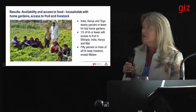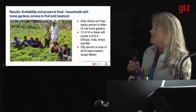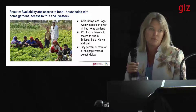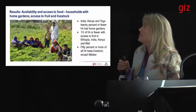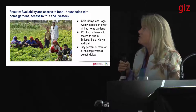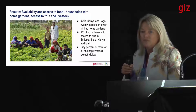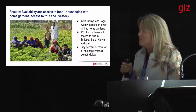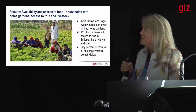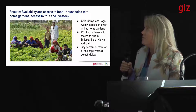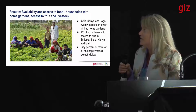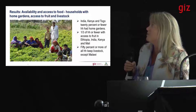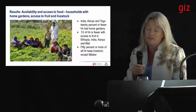There are also a large series of questions on home gardening, access to fruit, and livestock. In India, Kenya, and Togo, 20% or fewer households had home gardens. One third or fewer of households had access to fruit in Ethiopia, India, Kenya, and Mali. Interestingly, 50% or more of all households keep livestock, except in Malawi.